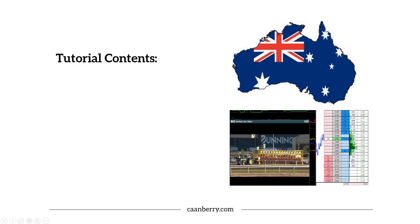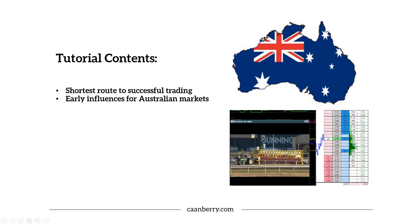I'm going to start off by briefly overviewing what is the shortest route to successful trading — it's very important to me. It's something I did wrong early on. I went the long way around; there's a very hard way to do things or there's an easier, shorter path. Then I want to talk about Aussie influences and indicators within the Australian exchange markets, what's important and why.